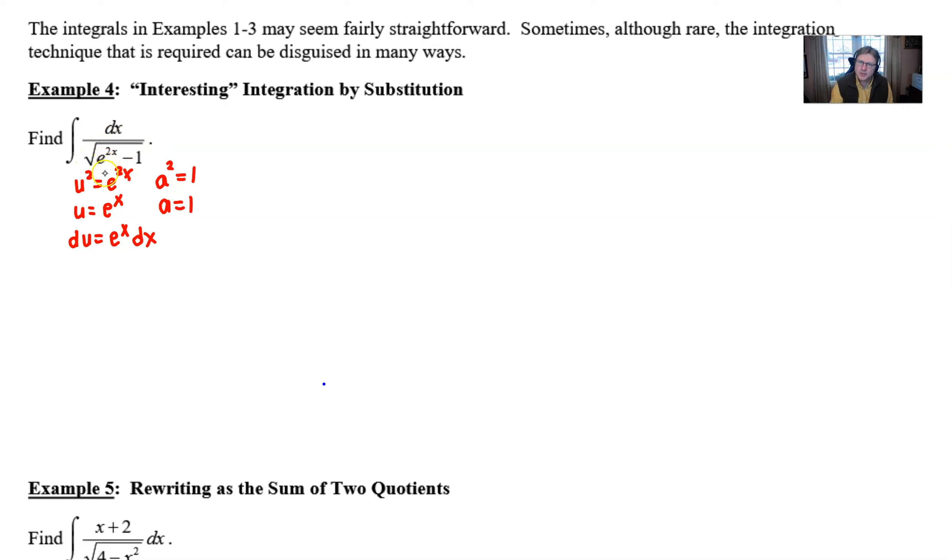If you're thinking arc sine, the 1 should have come first. If you're thinking arc secant, well shouldn't there be something here like an e to the x or absolute value of e to the x to be more precise, which is the same as e to the x? So it's like, what gives?